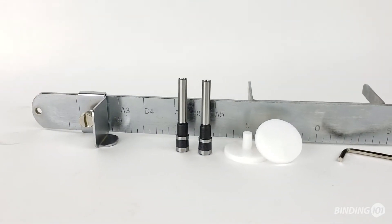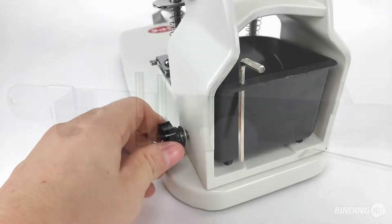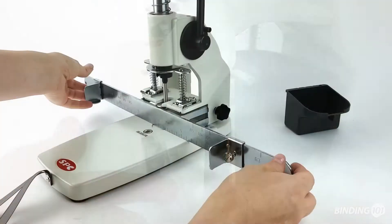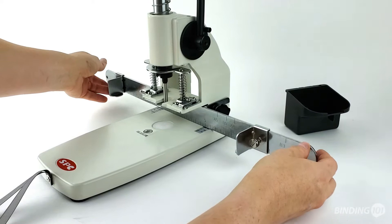First, let's attach the back gauge paper guide. Loosen the knobs on each side of the machine and push the washers outward. Slide on the back gauge so the arms go over the screws.